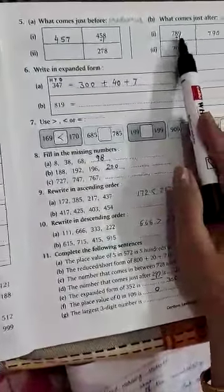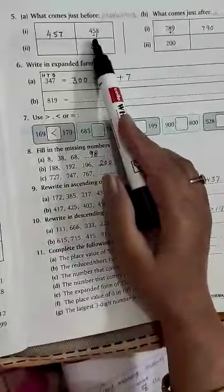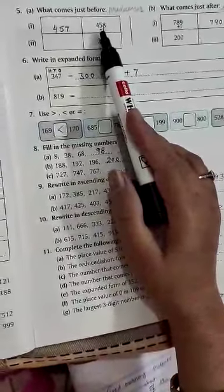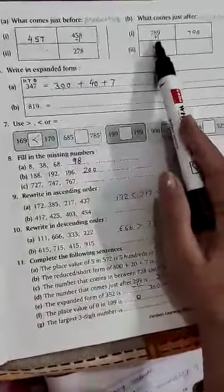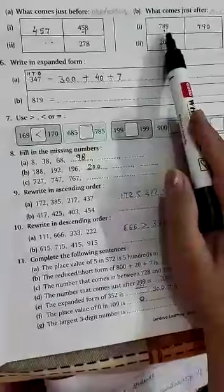And to find the successor, we will add 1. So, here we will subtract 1 from 458, we got 457. And here we add 1 to 789, we got 790.